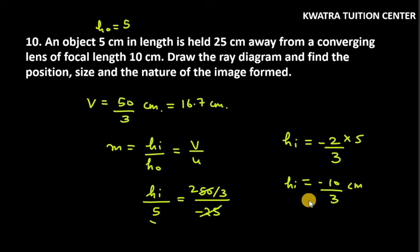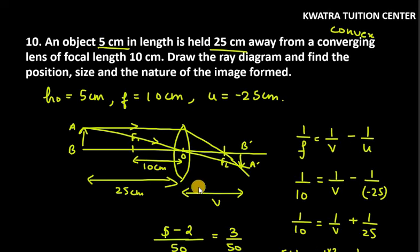You can see that it is minus, meaning that the height of your image is inverted and it shows that it is diminished. I have given you all the information for question number 10. You can see V is 16.7 cm. That is the complete answer for question number 10.